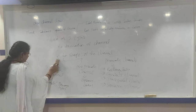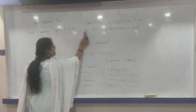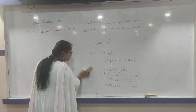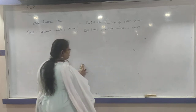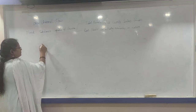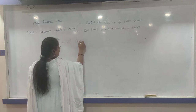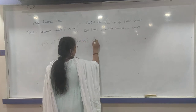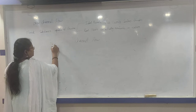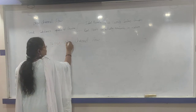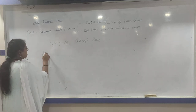Coming to flow of fluids — now we will discuss about types of flow of channels. Types of channel flow mainly consist of steady flow, unsteady flow, uniform flow, non-uniform flow, laminar flow, turbulent flow, and critical, subcritical, supercritical flows.